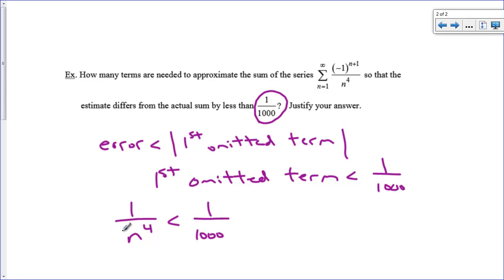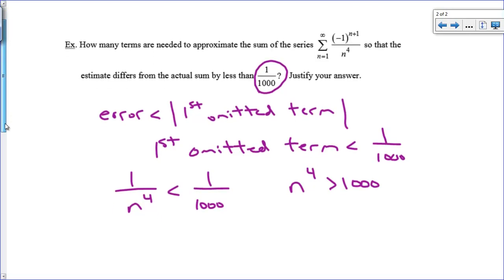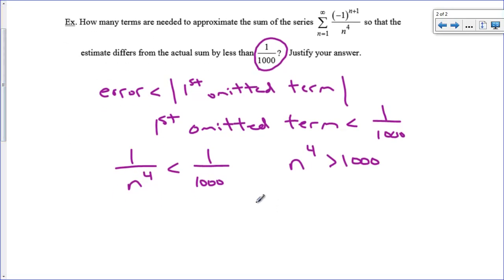And of course, for this fraction to be smaller, we need the denominator, n to the fourth, to actually be larger than a thousand. Bigger denominators make smaller numbers. So I need to know, when is n to the fourth going to be greater than a thousand? And I'm just going to guess and check my way through this.